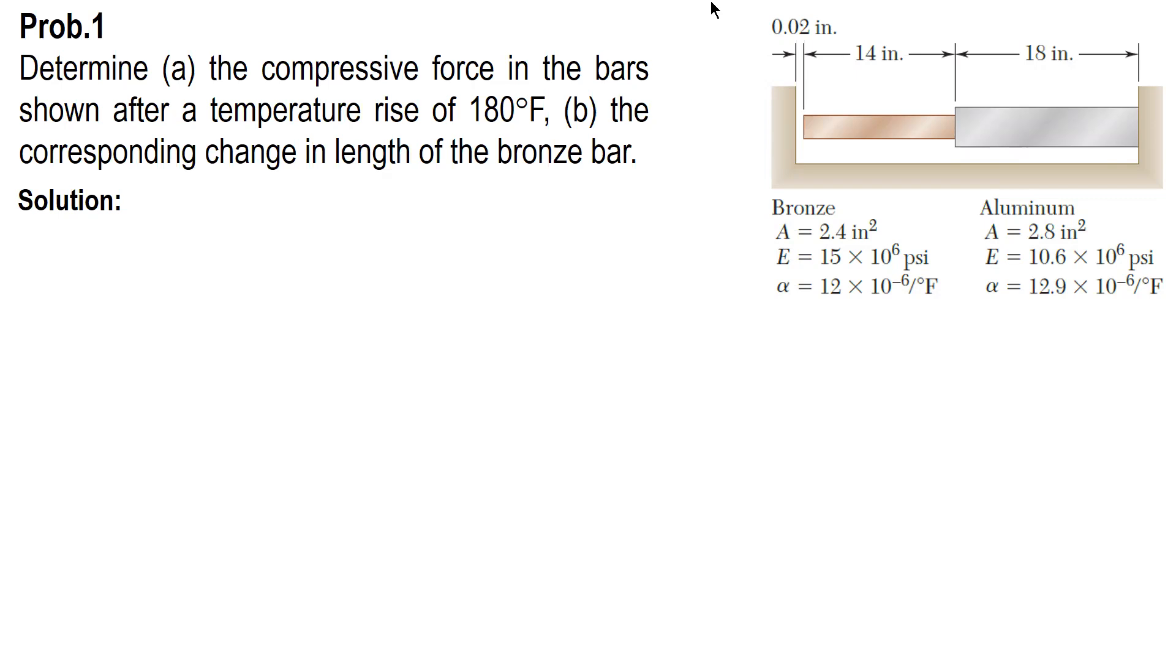Now, the initial condition is there is a gap of 0.02 inches between the wall and the bronze bar. So first, if there is a change in temperature, if you allow the assembly to expand or contract. But since the condition here is temperature rise, then allow this one to expand.